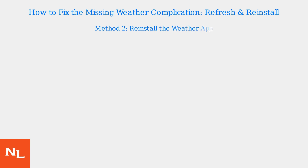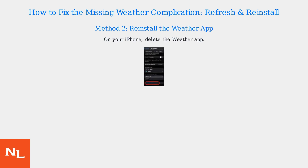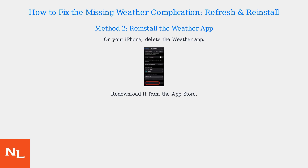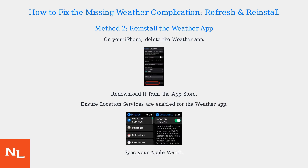If that doesn't work, try reinstalling the weather app on your iPhone. Delete the weather app, then re-download it from the App Store. This will reset its permissions. After reinstalling, ensure location services are enabled for the weather app and sync your Apple Watch.